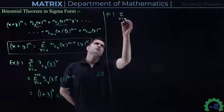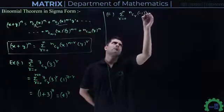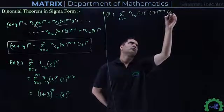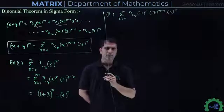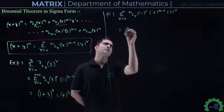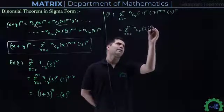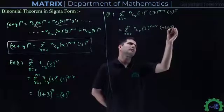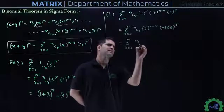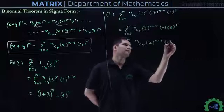Let's see one more example: Σ (R=0 to N) NCR · (-1)^R · 7^(N-R) · 3^R. To convert this to standard form, we get Σ (R=0 to N) NCR · 7^(N-R) · (-1·3)^R, which equals Σ (R=0 to N) NCR · 7^(N-R) · (-3)^R.